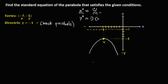This is now the formula. We have x minus h, squared, equals negative 4p times y minus k, since the parabola opens downward. From the given vertex, h is negative 7 and k is negative 5. But we still need to solve for p.